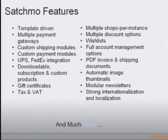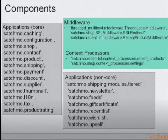I don't want to go through all the features — you can see those on the website — but some are more unique to Satchmo than you'd see elsewhere. We have a bunch of core applications as well as non-core applications that are completely independent; if you don't want to use them, you don't have to. We use middleware context processors to decouple those applications, and we also use signals quite a bit — we'll talk more about that later.